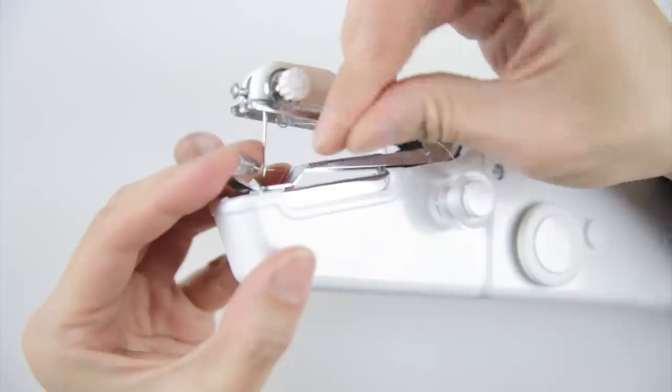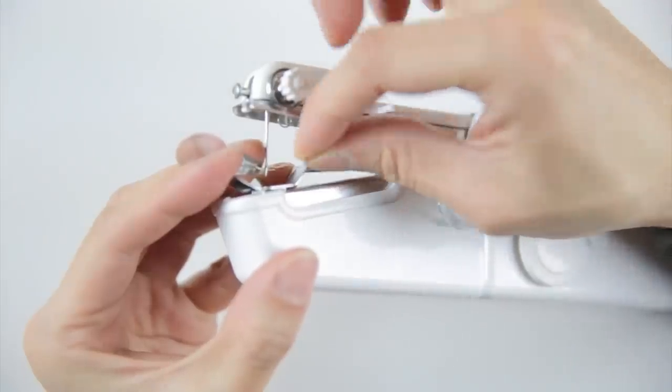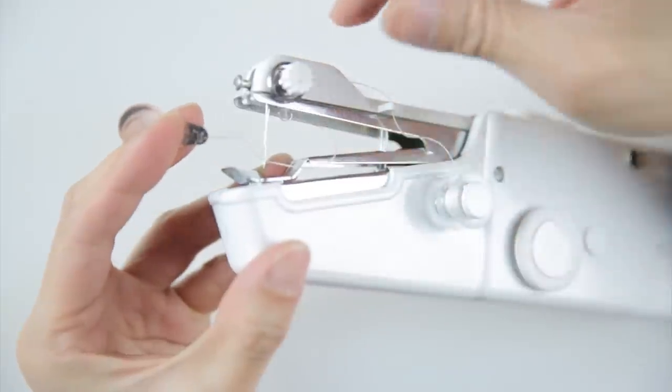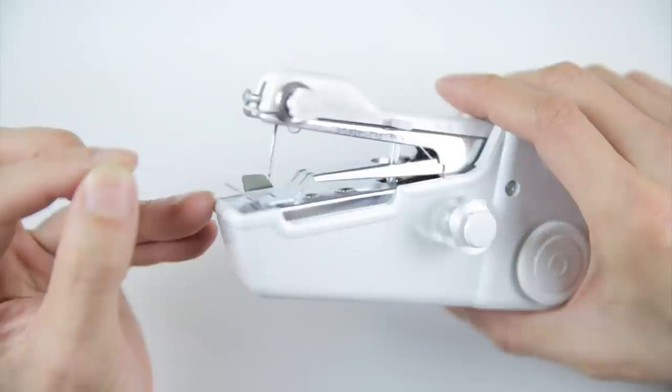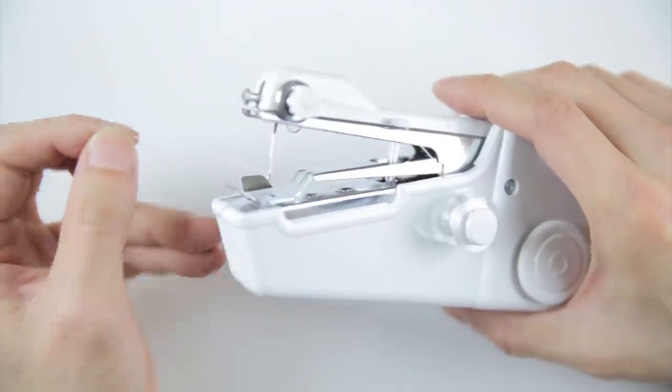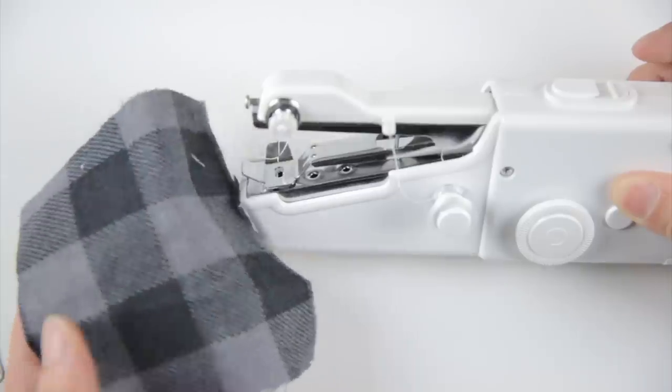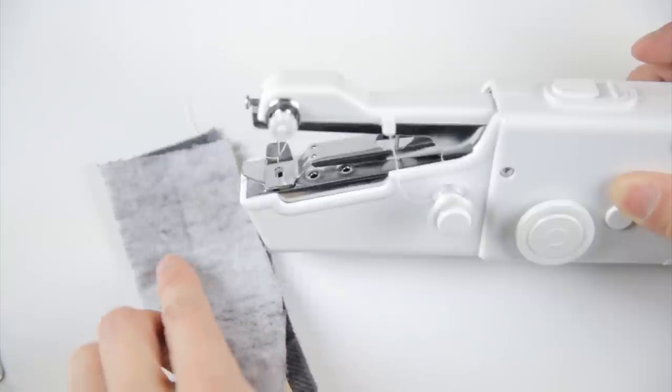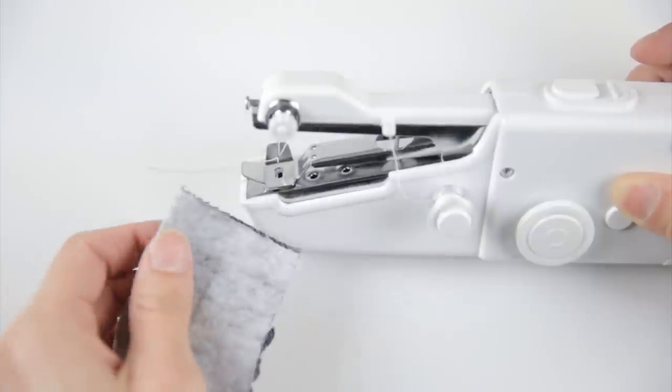Then you put this string through that thing there and you just pull it out. And then you have about two inches of string out here and then you're ready to go. So I got this little piece of cloth I want to turn into a little pocket. So I'm going to fold it up like this. This is inside out first.